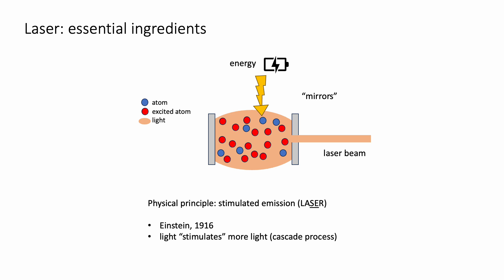The physical principle that allows the laser to operate is called stimulated emission. This was discovered by Einstein and corresponds to the fact that the presence of some light nearby stimulates excited atoms to emit more light. This produces a cascade process, similar to that of an atomic bomb, for which more and more light is generated.